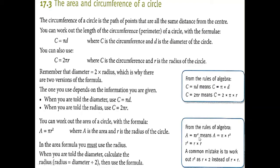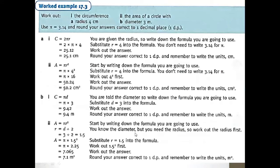We also know the area of a circle is pi R squared. R squared doesn't mean R multiplied by 2 — R squared means R is multiplied by R. Now, the most important thing: we know the formulas for circumference and area of a circle.